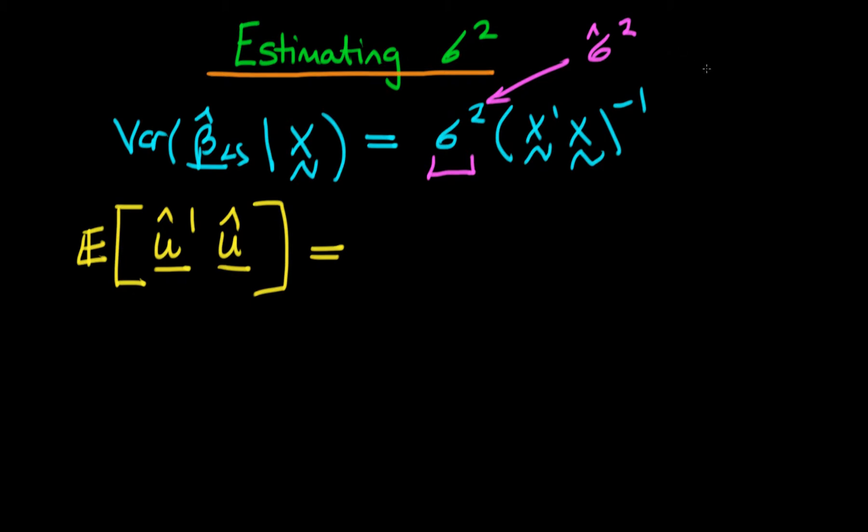Because remember that the residuals are themselves an n by 1 vector, which means that this u hat prime is going to be a 1 by n vector, and this is going to be an n by 1 vector. When you multiply them together, you're going to get a 1 by 1, so you're going to get a scalar out.